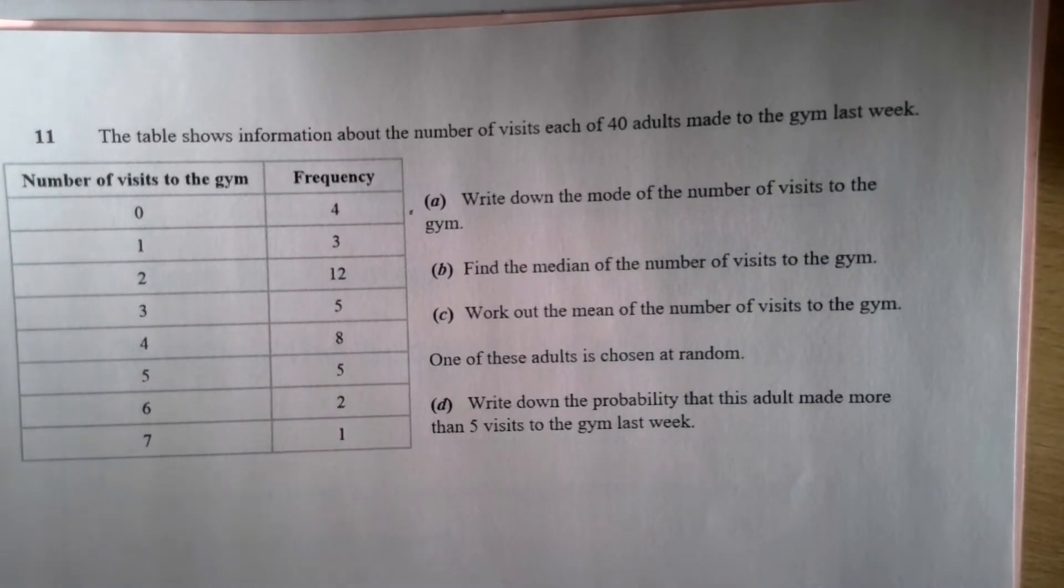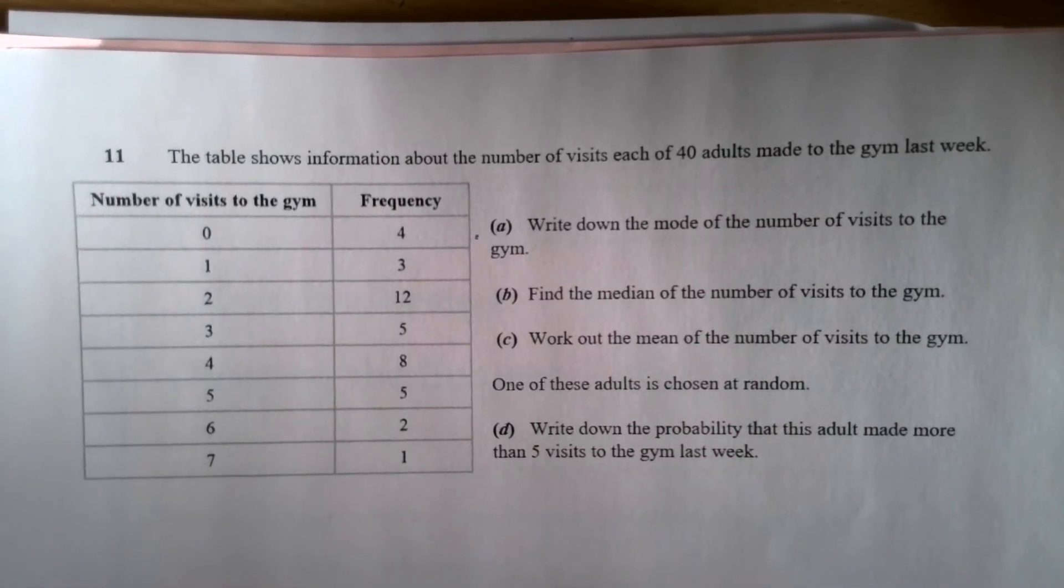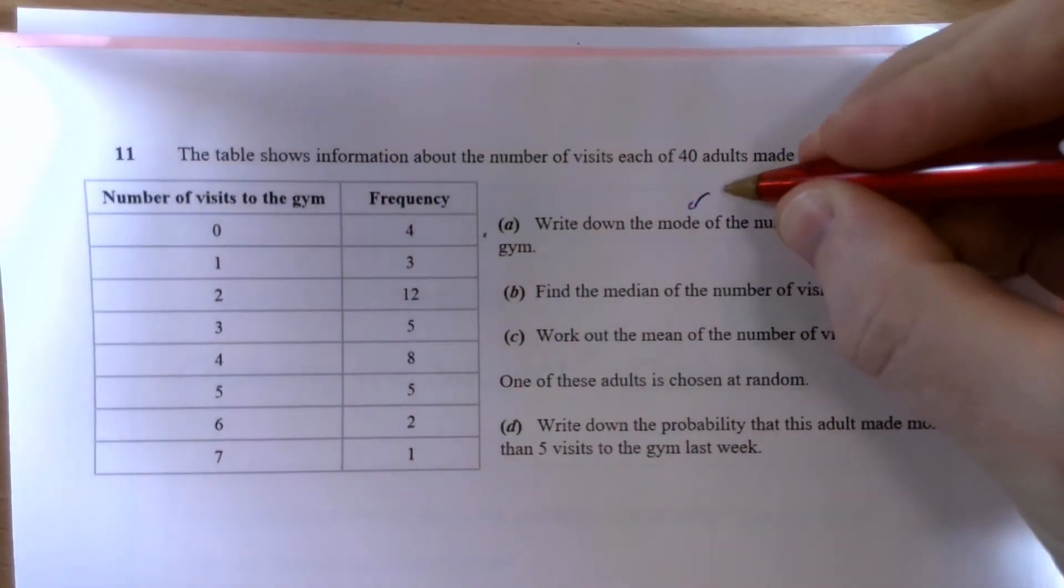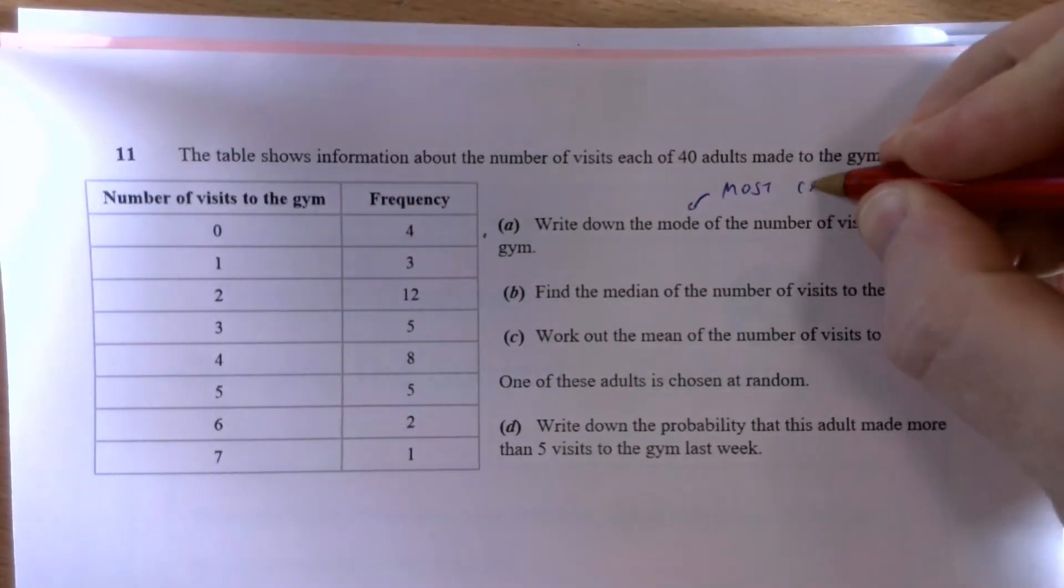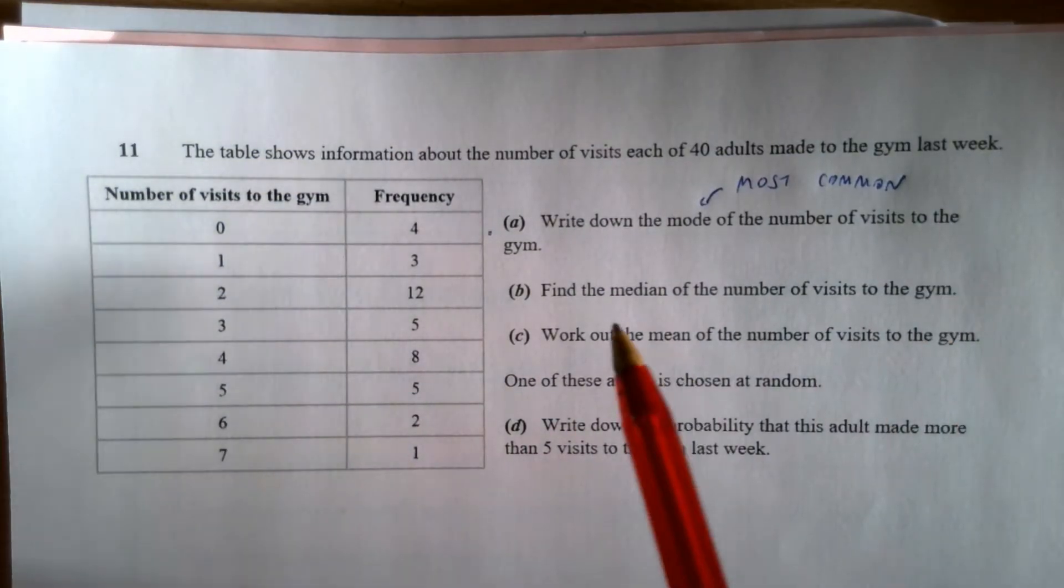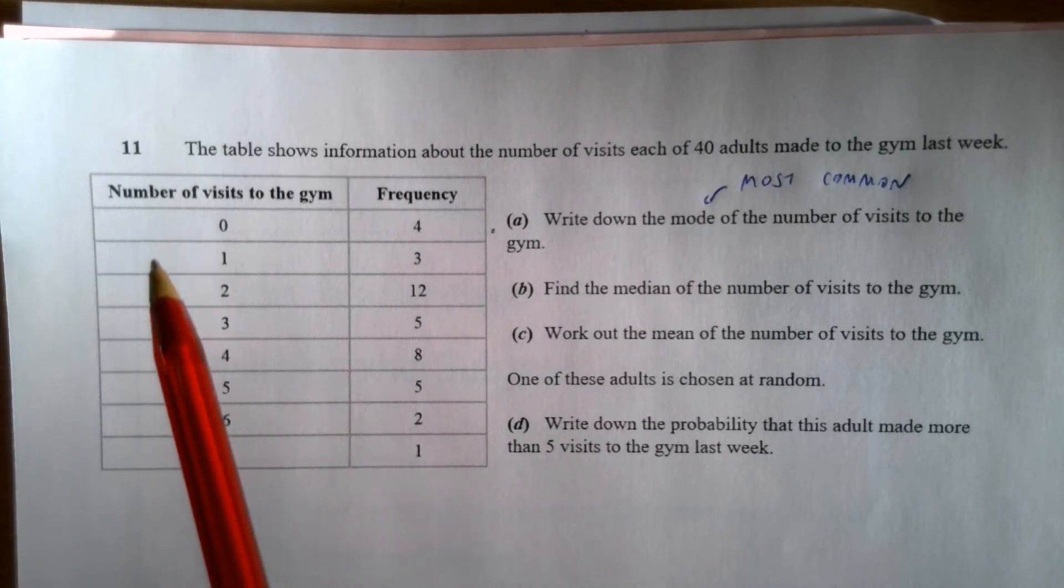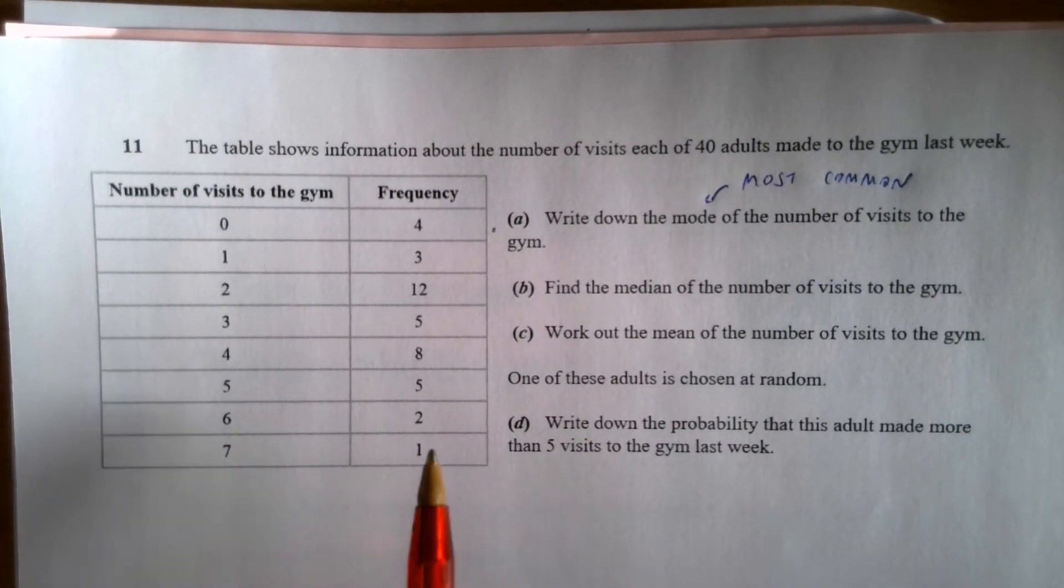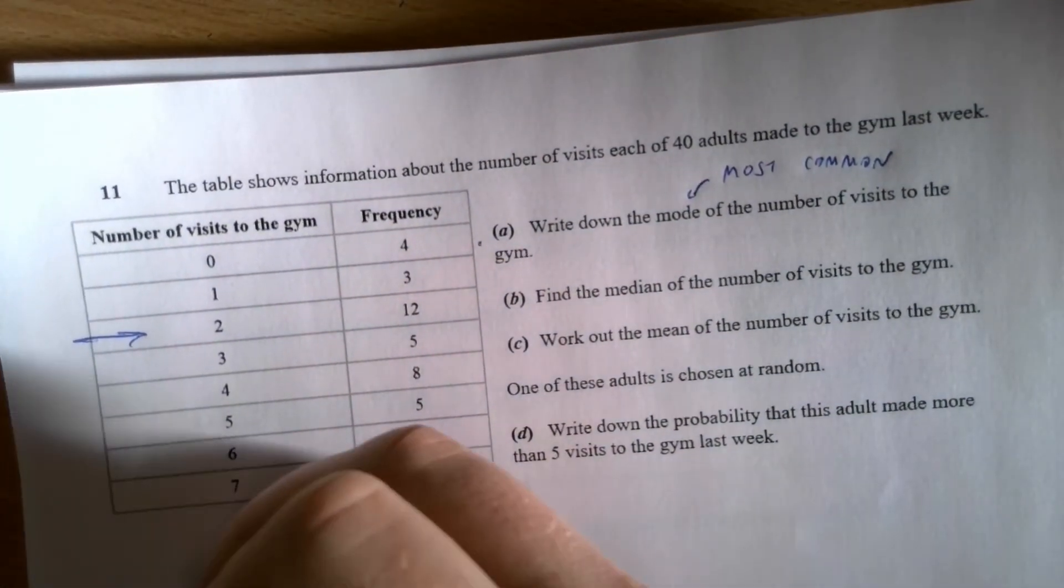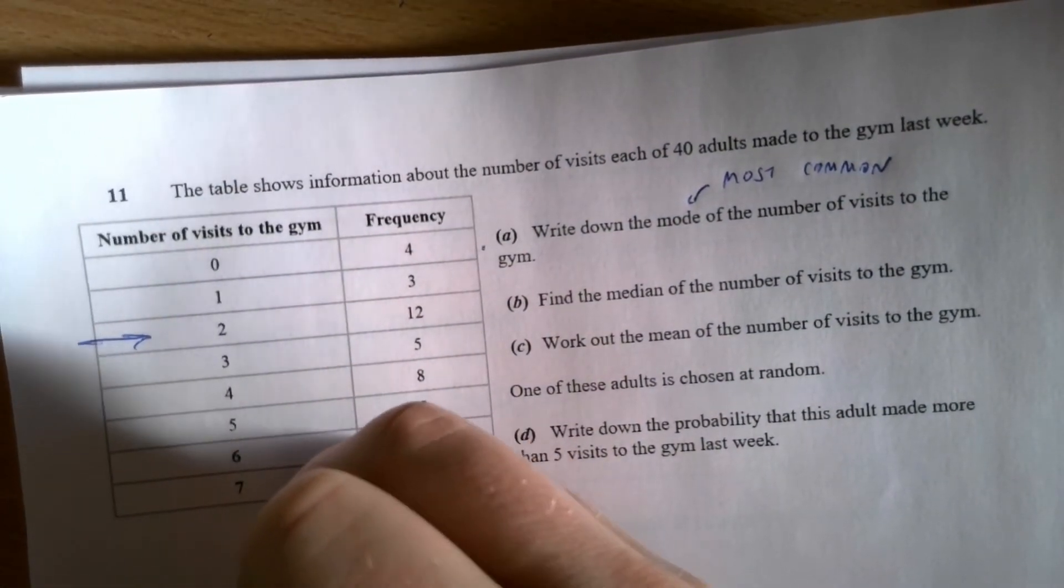Write down the mode of the number of visits to the gym from this table showing the number of visits each of 40 adults made to the gym last week. The mode means the most common, the most occurring figure. Which one of these numbers of visits to the gym has the highest frequency? That is the mode. Well, I hope you can see that that's two. So my answer for A is that the mode is two.